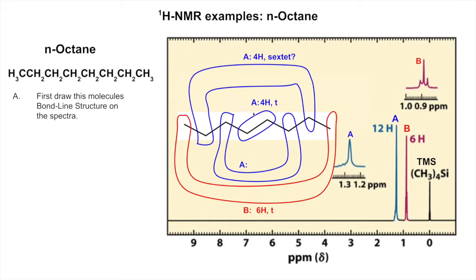Now the middle ones - a lot of times people get confused here. This is a four-hydrogen triplet, even though you can't see it because they're all on top of each other. We predict it as a four-hydrogen triplet because these two hydrogens have two neighbors to one side making them a triplet. Those two hydrogens are equivalent to each other, not neighbors, so we only consider non-equivalent neighbors. We get a two-hydrogen triplet and another two-hydrogen triplet that overlap into a four-hydrogen triplet.